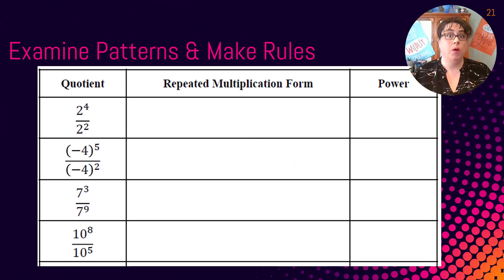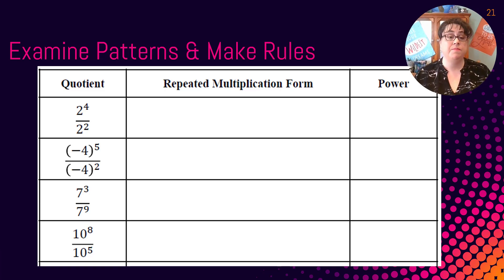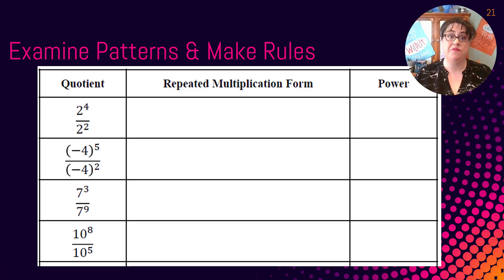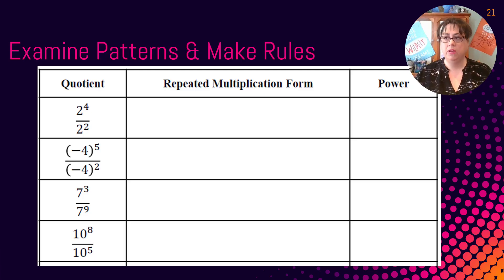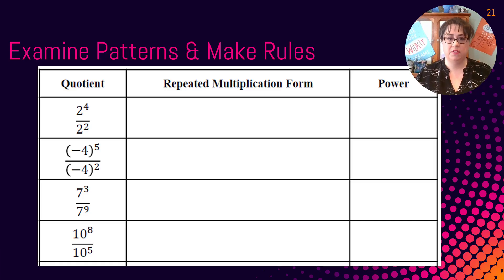We're going to begin by examining patterns in order to make our rules. Quotient means to divide. So we're going to begin by looking at two to the fourth divided by two squared.